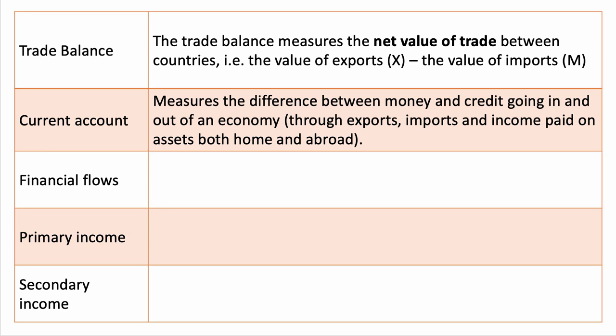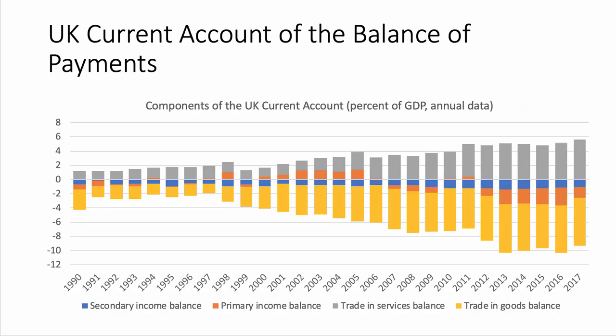The current account includes the trade balance. It's essentially whether a country is paying its way internationally in terms of its external transactions, measuring the difference between money and credit coming into a country and going out — through exports, imports, and the income paid on assets both home and overseas. The current account is made up of four balances: the balance of trade in goods (shown in yellow for the UK), trade in services (a surplus for the UK, shown in grey), the primary income balance (now a deficit for the UK), and the secondary income balance (also negative for the UK).